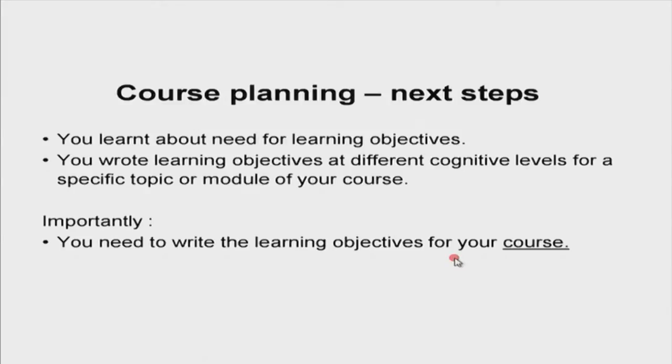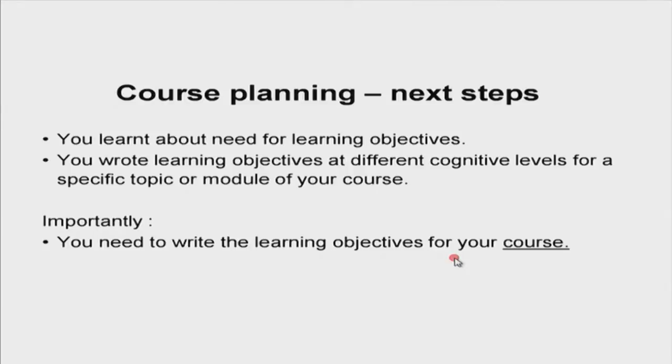Your course has various modules — usually about 5 to 8 modules per 40-hour course. Each module has 3 to 5 topics or subtopics, so there are about 40 subtopics total, since we usually do one subtopic per class. The learning objectives we wrote were at a more detailed, specific level. Now we need to think about the entire course — what we want students to be able to do at the end of the semester at a synthesized level. Let's look at a few examples first.